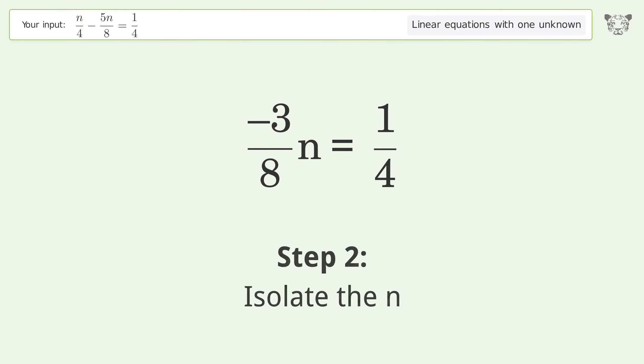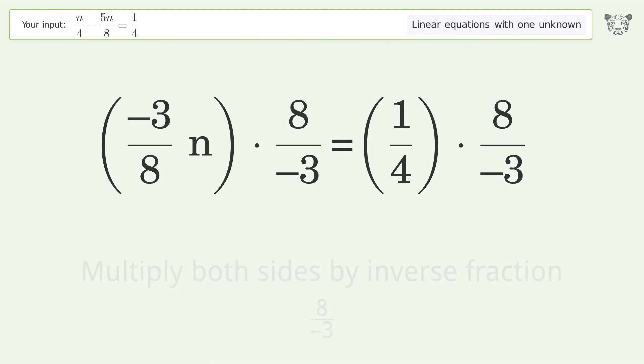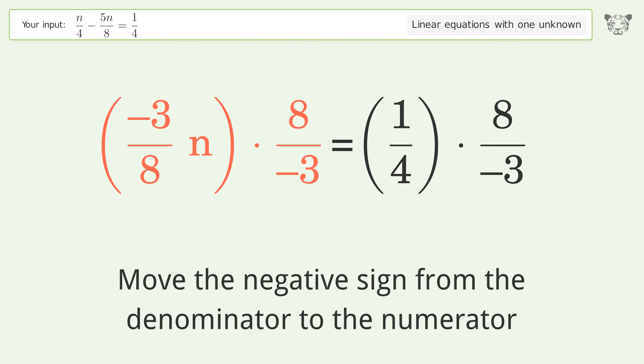Isolate the n. Multiply both sides by inverse fraction 8 over negative 3. Move the negative sign from the denominator to the numerator.